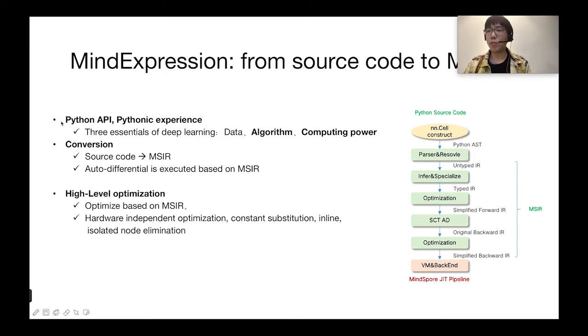MindSpore graph engine layer contains graph low-level optimization or GLLOs, and graph execution. The GLLO includes hardware-related optimization and in-depth optimization related to the combination of hardware and software, such as operator fusion and buffer fusion. Graph execution provides communications APIs required for offline graph execution and distributed training. The last part is MindSpore back-end runtime layer. This layer contains the efficient running environments on the cloud, on edge, and the devices.